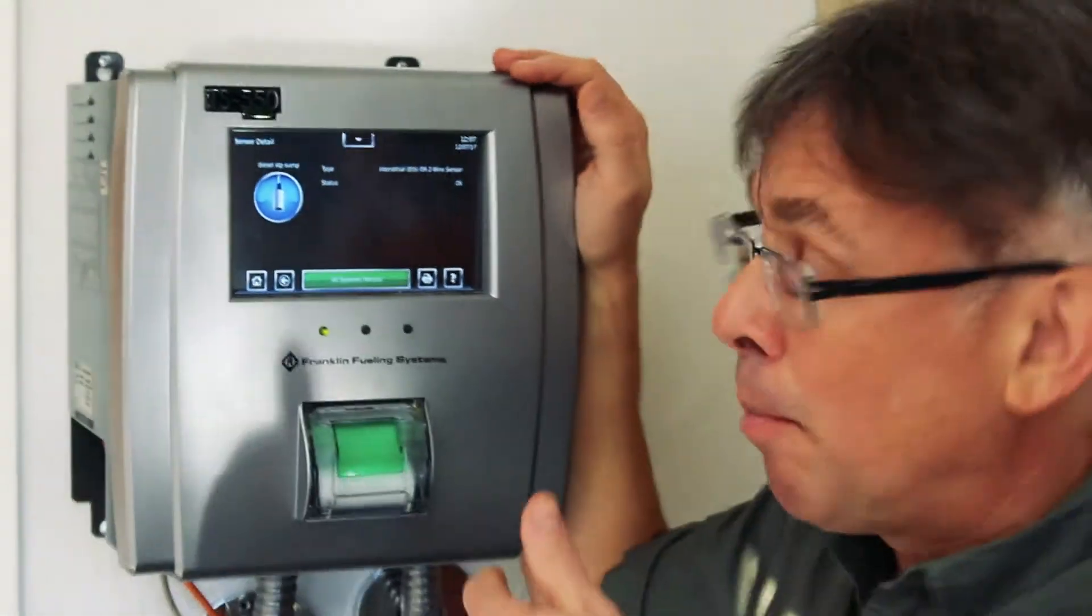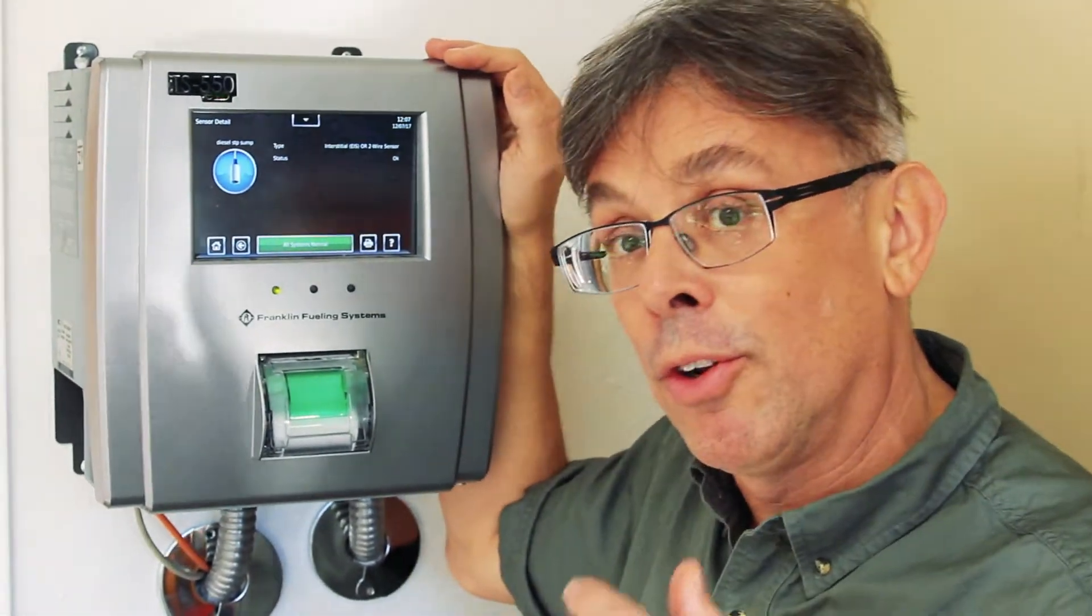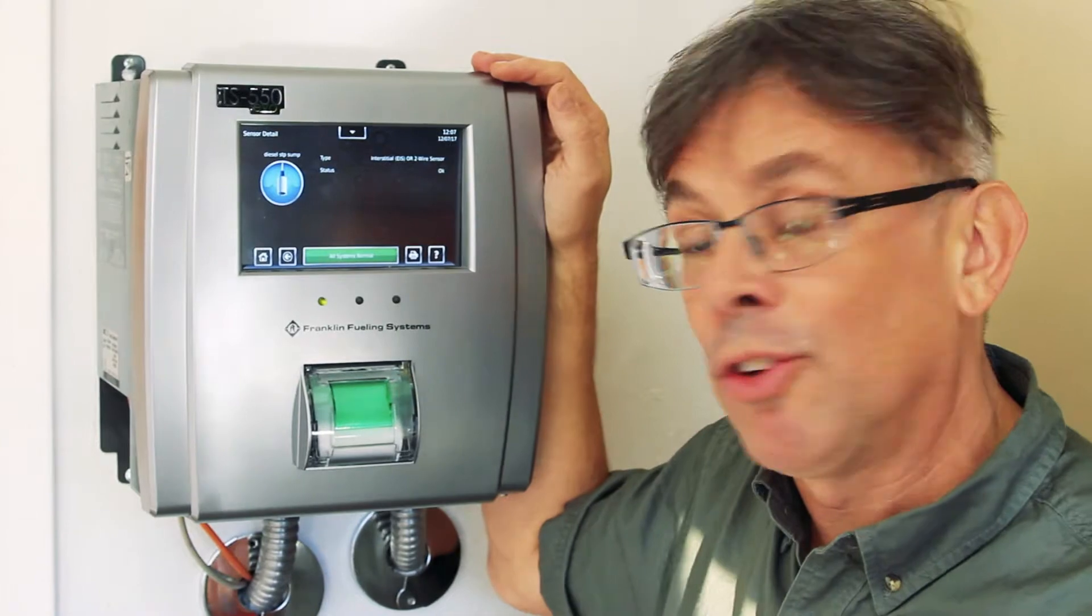You know we have a double wall tank and pipe here, and under dispenser sump sensors, double wall interstitial monitoring.